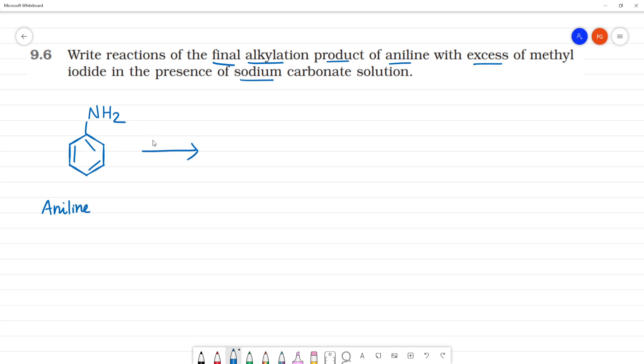So, with one molecule of methyl iodide, CH3I. What is methyl iodide? CH3I. This is methyl iodide.